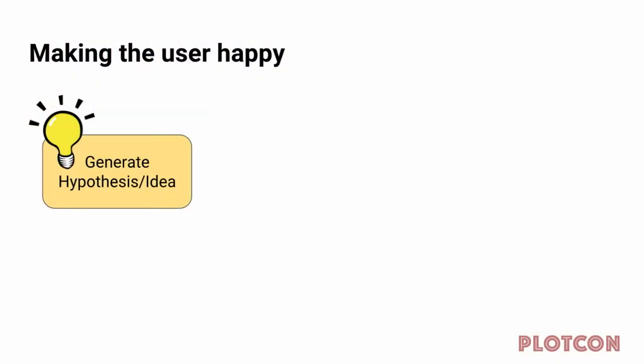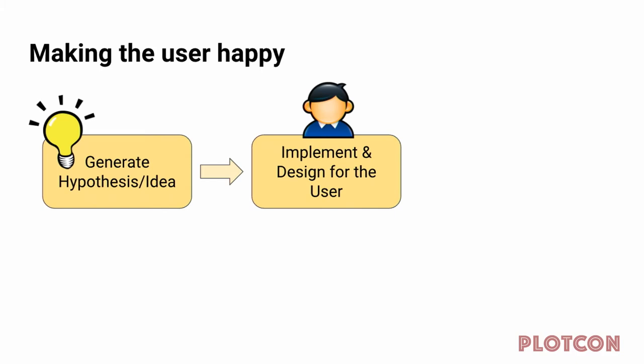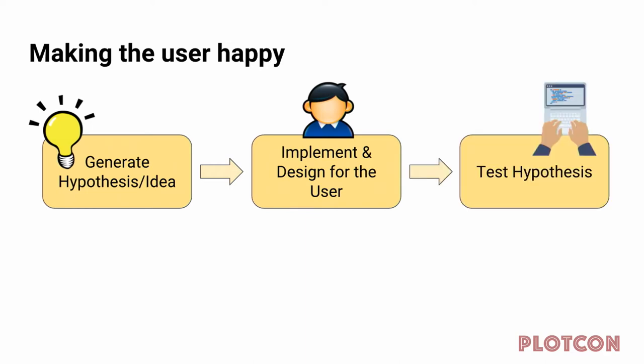Here's a workflow I created that will guarantee to make your user happy. First, generate your hypothesis or idea — whether it's a new blog post, a new charting engine, whatever. Create an awesome idea; that's where you always start. After that, implement it — make it real — and while doing so, always keep the user in mind and design for them. Then the most important part: test your hypothesis. Launch it — put it in the user's hands. Post it on GitHub, publish your blog post, get users using it.